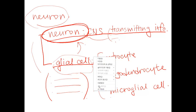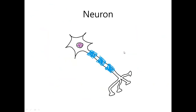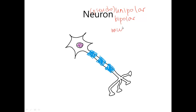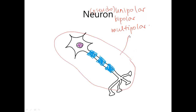First, let's learn about neurons, which are the main interest of us. This is how a neuron looks like — this is drawn by me, so it is not a very accurate representation, but it is a simplified representation of a neuron. There are several kinds of neurons: there are unipolar or pseudo-unipolar neuron, bipolar neuron, and multipolar neuron.